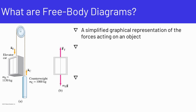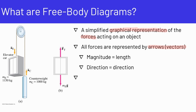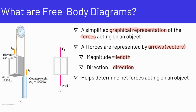So what are free body diagrams? Free body diagrams are simplified graphical representations of forces acting on an object. All forces are represented by arrows because forces are vectors. The magnitude of the force is represented by the length of the arrow, and the direction of the force is represented by the direction of the arrow. This helps us determine the net forces acting on the object.